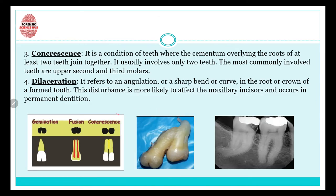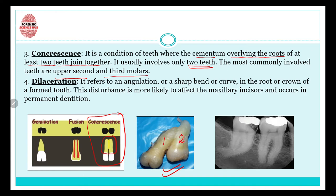Then comes concrescence — it is a condition where the cementum overlying the roots of at least two teeth join together. The cementum present over the roots of two teeth fuses with each other, leading to concrescence. It usually involves only two teeth; the most commonly involved teeth are the upper second and third molars. The roots get fused due to fusion of the cementum.